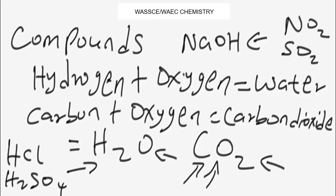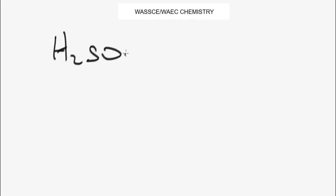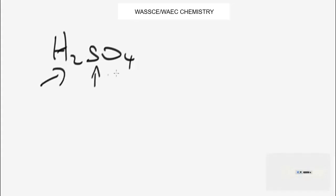Still considering the number of atoms in a compound, another example is sulfuric acid. In H₂SO₄, we have two atoms of hydrogen, one atom of sulfur, and four atoms of oxygen.